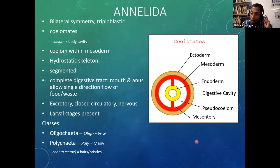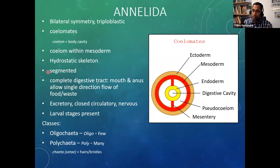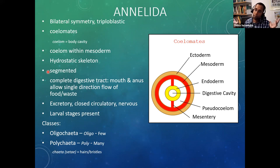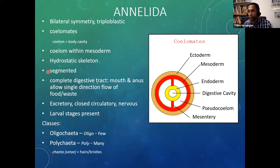Because they have a coelom, it can function as a hydrostatic skeleton, allowing them to maintain body shape and move efficiently. They are truly segmented. The proglottids of Platyhelminthes are not true segments — a true body segment cannot function independently without the entire animal. Proglottids can act independently, which is exactly what sets them apart from true body segments.